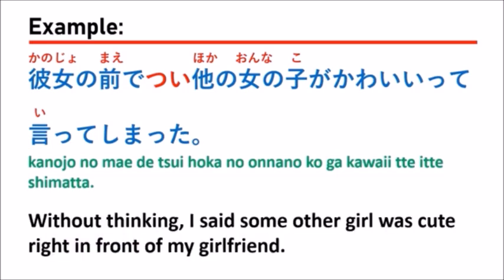Here is our first example: 彼女の前でつい他の女の子が可愛いって言ってしまった。 Which means: 'Without thinking, I said some other girl was cute right in front of my girlfriend.'